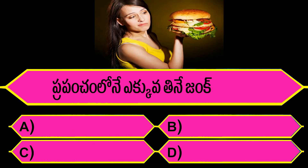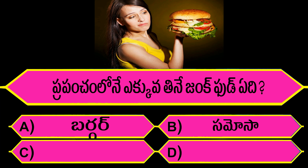Prapancham lo nee 1 junk food. Option A: Burger. Option B: Samosa. Option C: Pizza. Option D: Chips.